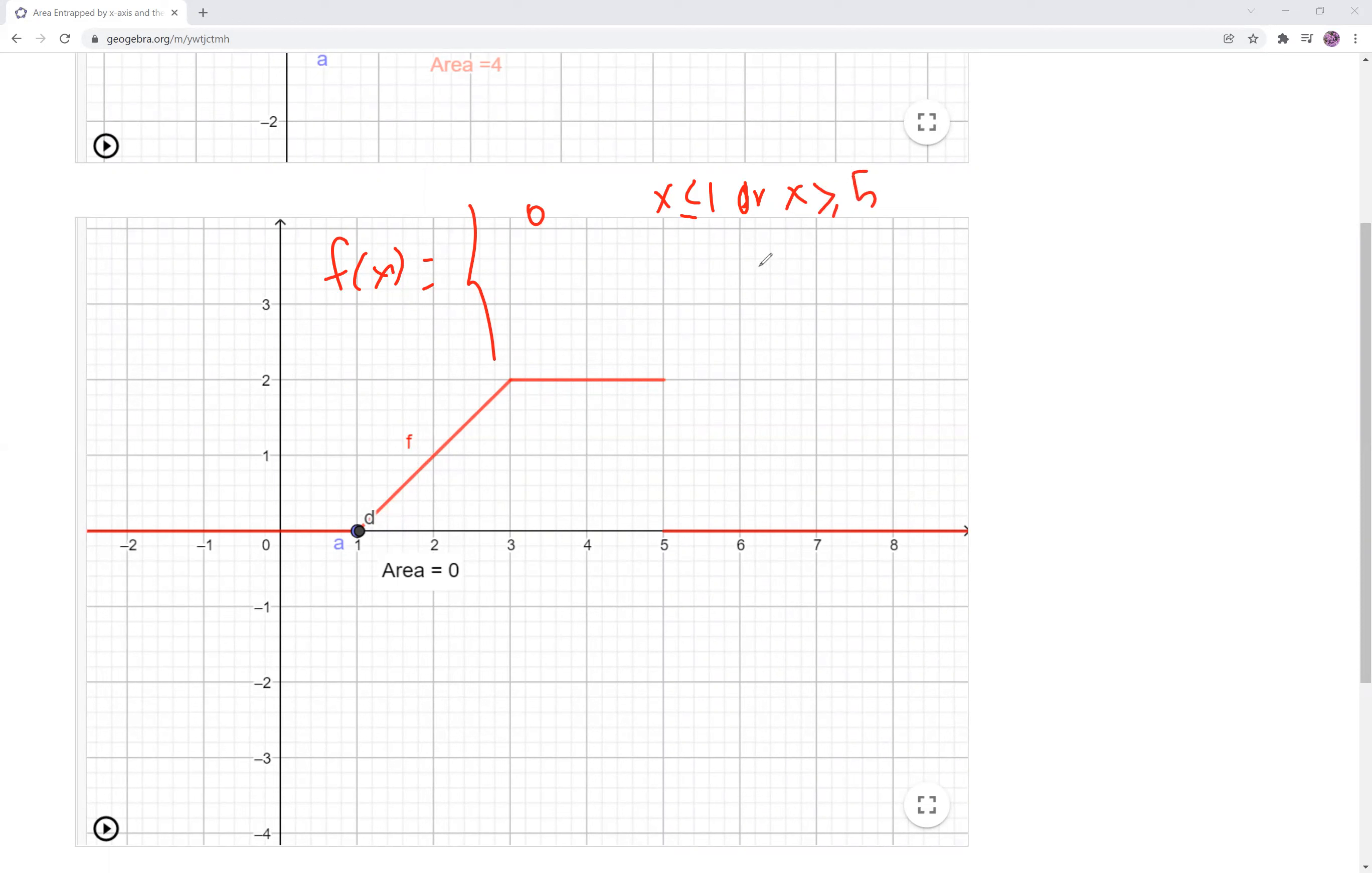Now, between 1 and 3, x is this line with slope 1, and it goes through point 1 and 0 right there. So it's basically x minus 1. And then x between 3 and 5 is just the constant value 2.